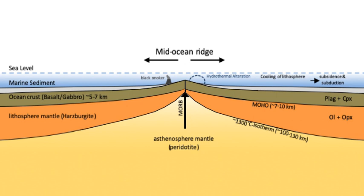Another proposed process is the mantle-conveyor mechanism. However, studies have shown that the upper mantle is too plastic to generate enough friction to pull the tectonic plate along. Moreover, mantle upwelling that causes magma to form beneath ocean ridges appears to involve only its upper 400 kilometers (250 miles), as deduced from seismic tomography and studies of the seismic discontinuity at about 400 kilometers. The relatively shallow depths from which the upwelling mantle rises below ridges are more consistent with the slab pull process.